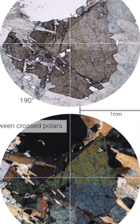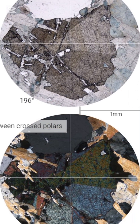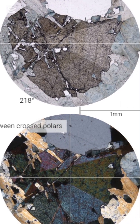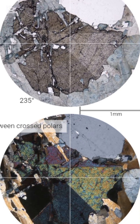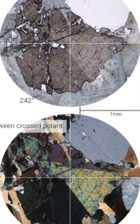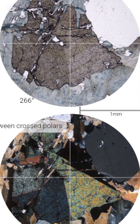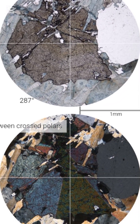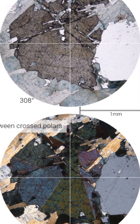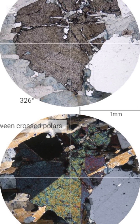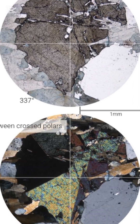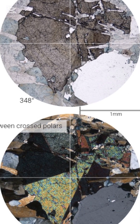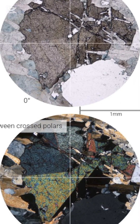The pleochroism changes from blue to brown. Igneous tourmaline is present in the granitic portion of the rock, but the majority of the tourmaline grains are found in the vein. This hydrothermal tourmaline is darker in color, with a blue-brown pleochroism.